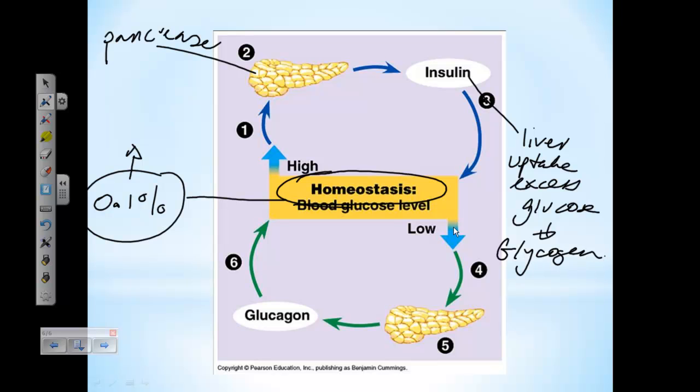When blood glucose falls, then the pancreas is going to make glucagon. Glucagon will target the liver again. But in this case, when we have low blood sugar, we're going to release glucose back into the bloodstream. So that concludes...